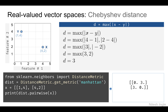Next is the Chebyshev distance. For this distance we take the maximum value of the absolute differences. So we take the difference between the x and y coordinates, take the absolute values, and then take the maximum value. Here the maximum value is three because three is greater than two, and therefore the Chebyshev distance is three. This is again represented in the output of the code.